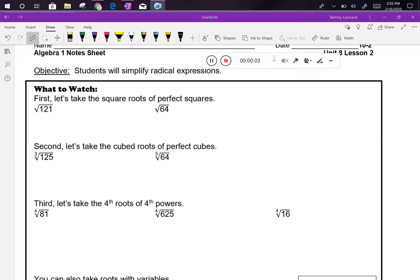In the first problem we're asked to take the square root of 121. You know that 121 is 11 squared, so the square root is 11. We're asked to take the square root of 64, and you know that 64 is 8 squared, so the square root of 64 is 8.